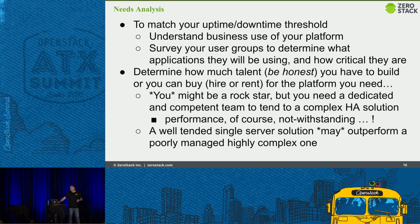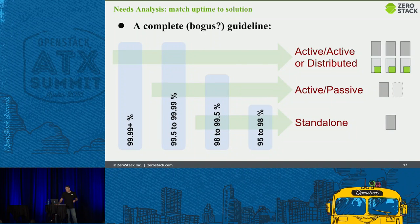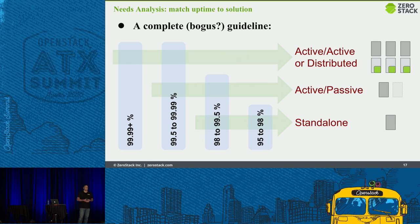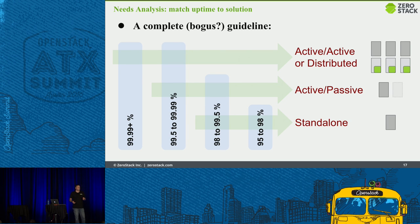Here is my — possibly completely bogus — guideline for architecture. There are so many different inputs that may determine a percentage level of uptime isn't the right way to pick your architecture. For example, a CI/CD environment churning hundreds of container instances may mean you're critically tied to the control plane much more so than to the data plane, which changes the metrics for what control plane solution to choose.